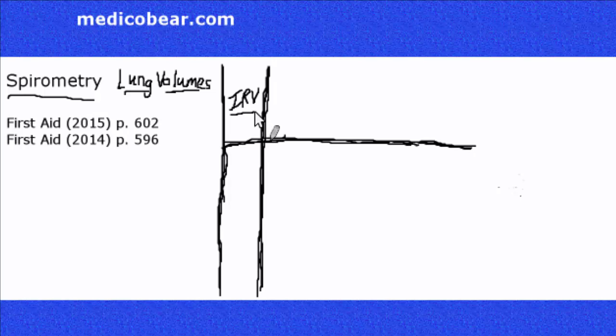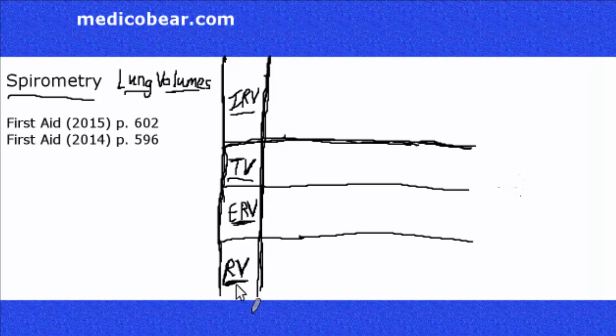Here is our IRV, that stands for inspiratory reserve volume. Then we have our TV—no folks, that's not our television, that's our tidal volume. ERV, that's our expiratory reserve volume. And after that we've got our RV, that's the residual volume. First Aid has a way of remembering this and it is LITER, so lung volume is LITER, it's I-T-E-R, L-I-T-E-R, that's liters.